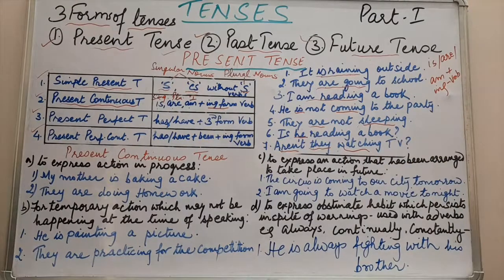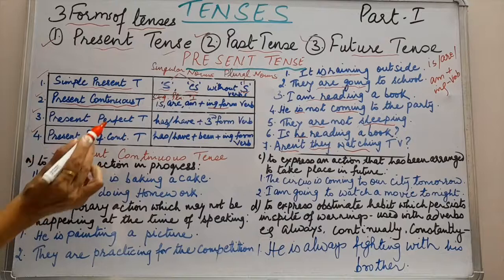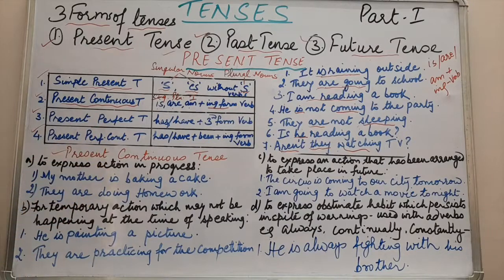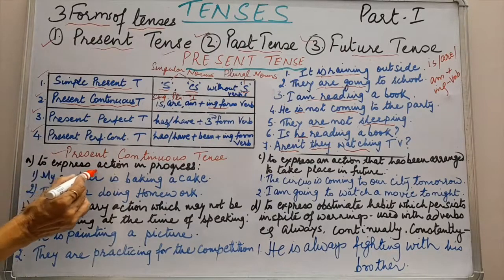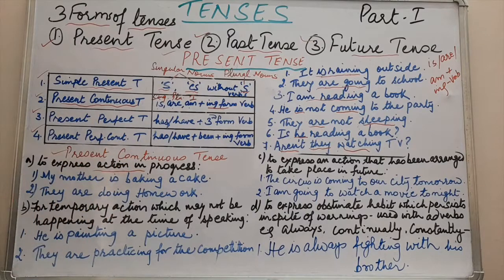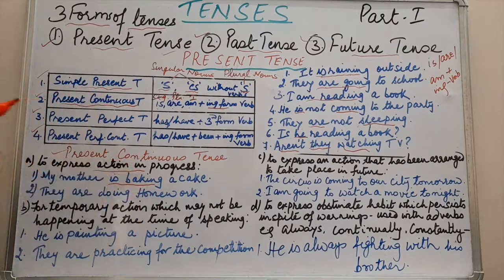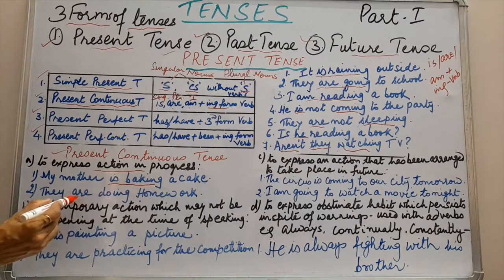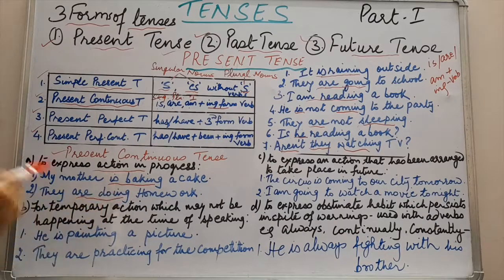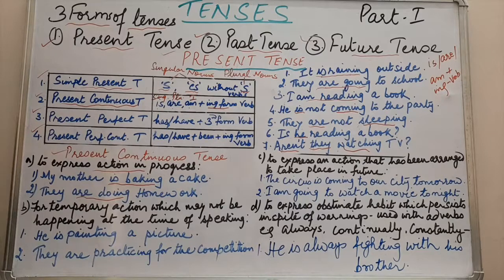Here are the situations in which present continuous tense is used. First is to express action in progress — progress means which is going on just now. Example: my mother is baking cake — she is in the kitchen baking right now, so we have used is baking. They are doing homework — they are sitting and doing homework at the present moment. Like I am teaching you — am teaching, ing form of verb.